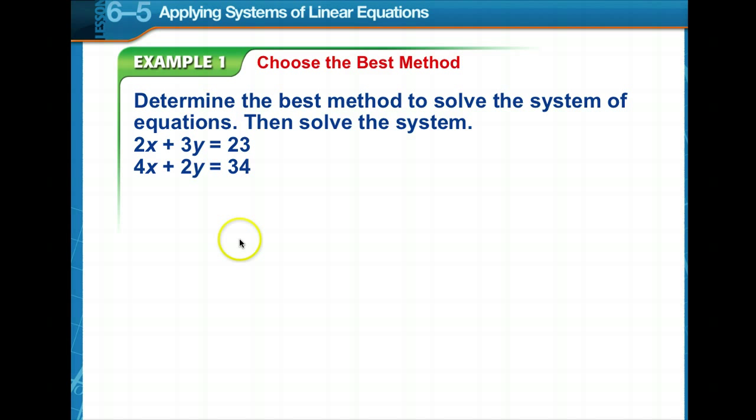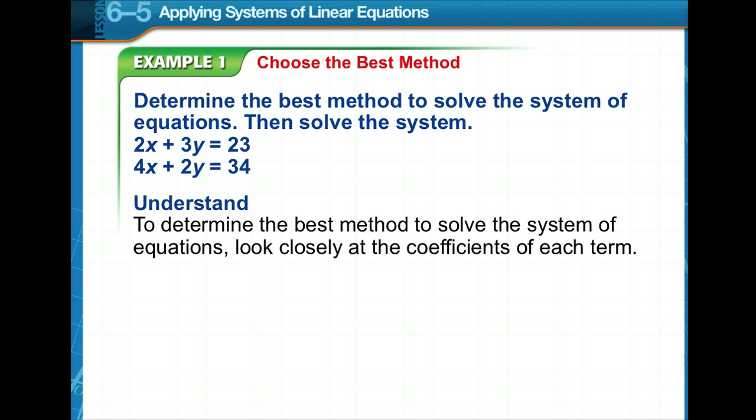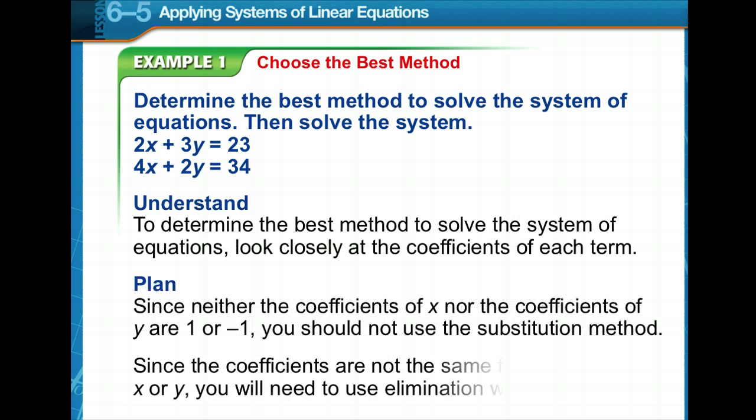So let's look at this system of equations to determine the best method. What do you notice? Well, first of all, we need a solution, so we're not going to graph. We need an exact solution. We don't have a 1 or a negative 1 as a coefficient to either one of these. We don't have additive inverses, so we can't use addition. So we're going to have to use elimination.